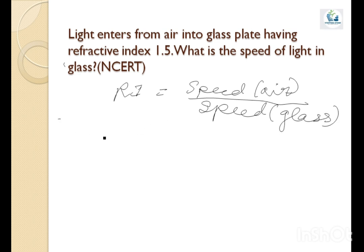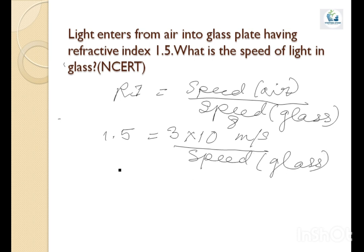Now, your refractive index is 1.5. Speed of light, we know it is 3 × 10^8 meter per second, and speed of light in glass you have to find it out. So, the speed of light in glass will be equal to 3 × 10^8 divided by 1.5.